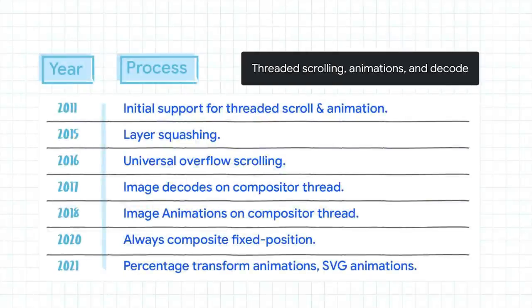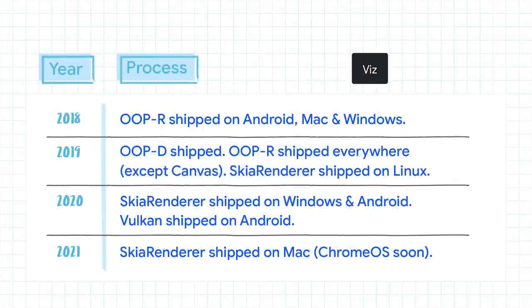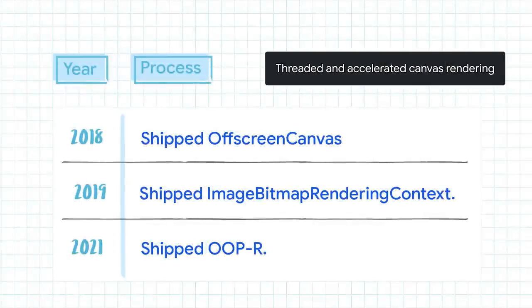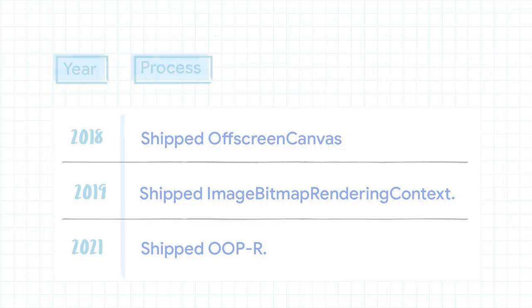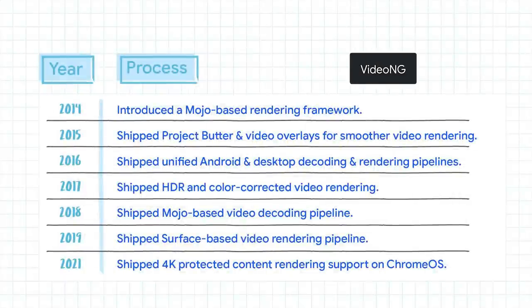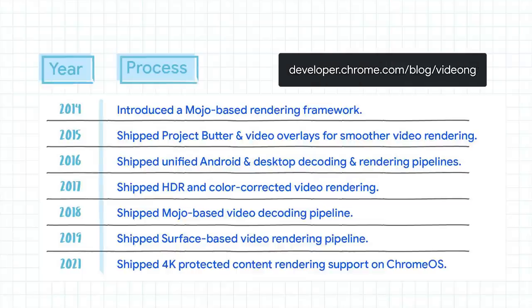Threaded scrolling, animations, and decode is a long-term effort to move all scrolling, non-layout-inducing animations, and image decoding off the main thread. Viz is a centralized raster and draw process for Chrome that increases throughput, optimizes memory, and allows for optimal use of hardware capabilities. Threaded and accelerated canvas rendering is the project that put in place the architectural pieces that made off-screen canvas possible. And finally, Video NG is a long-term effort to provide efficient, reliable, and high-quality video playback on the web.